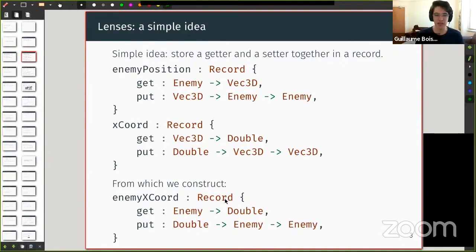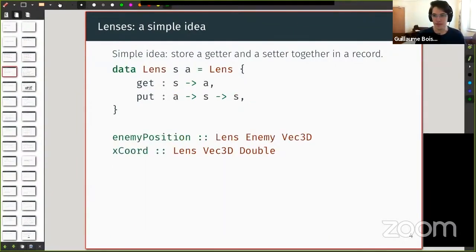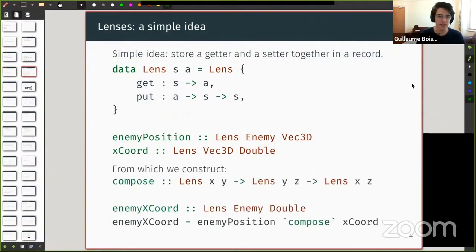So they come in pairs. In this example I have on the screen, I have an enemy in some game that has a position. In some OOP lingo, I have a getter that retrieves the position and a setter that updates the position. The idea of lenses is simply putting those two together in a record. And it gets interesting when I have multiple of those things. For example, here I have another one where I retrieve the x coordinate from a 3D position. And I can combine those two. That's where it's useful to have the two together. Because if we had just put on its own, we couldn't compose things. But now we can. And now we get a getter and a setter pair for the x coordinate.